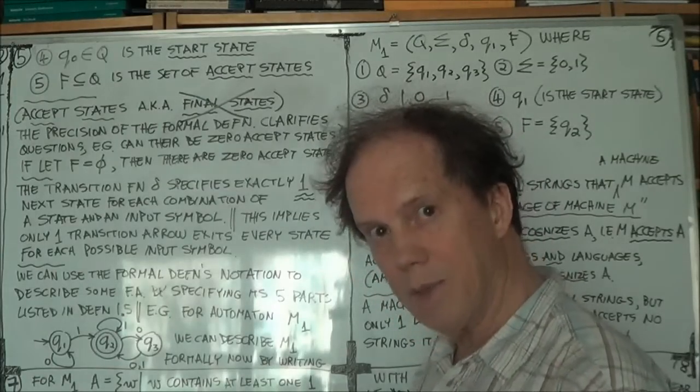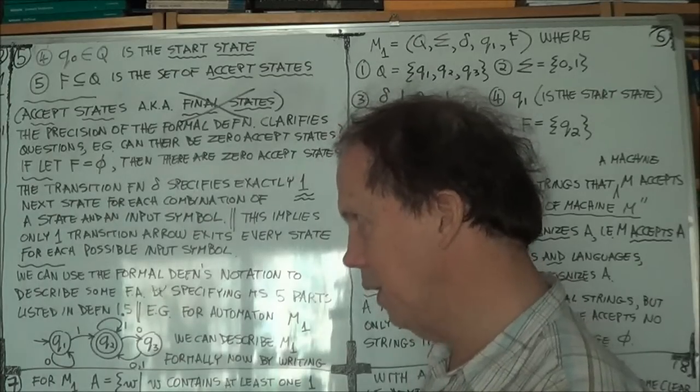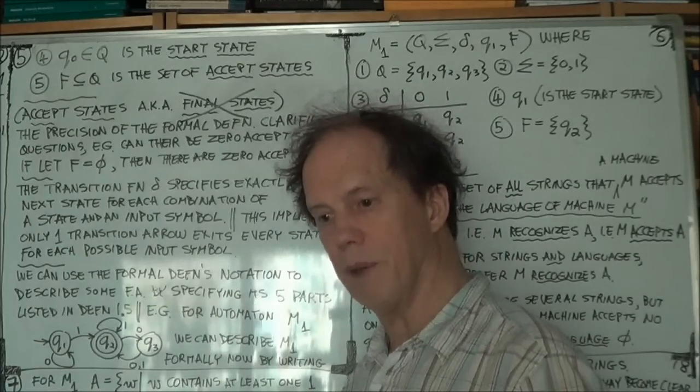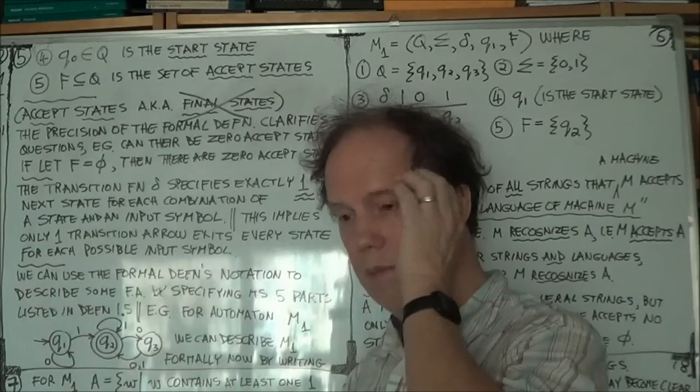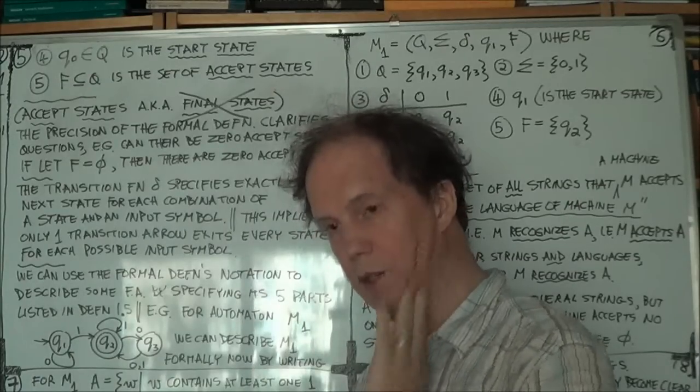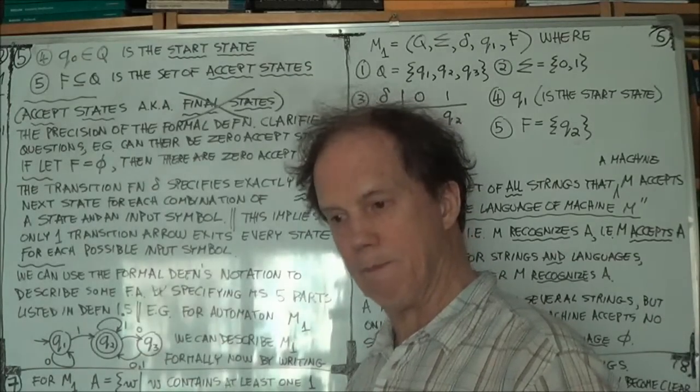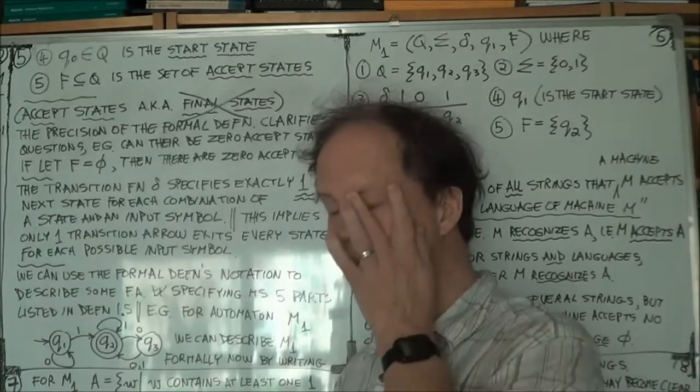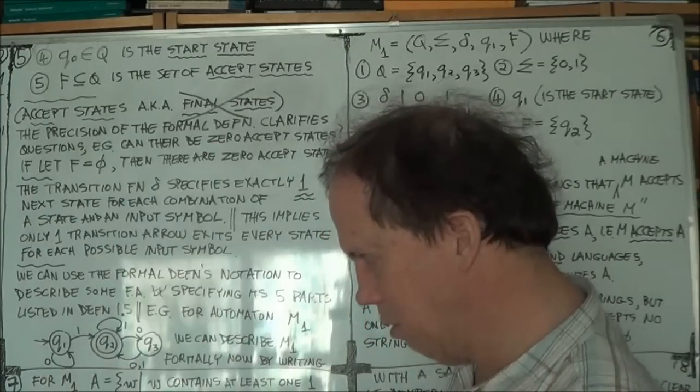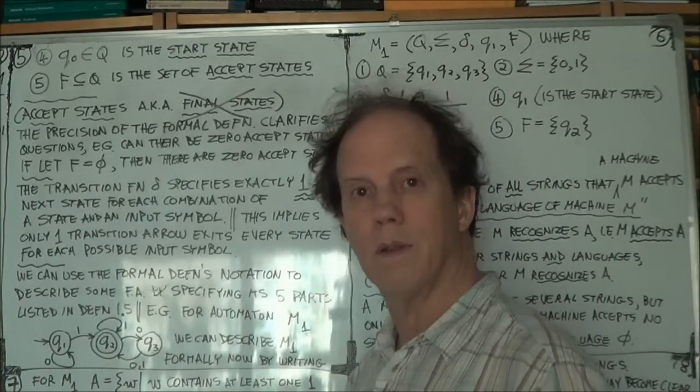And that comes out of the definition of your third term, from your transition function. Now it's a function, and a function by its nature in pure math, function always maps to just one element of your range. One element of the range. And hence that answers your question. So there's only one next state. Because delta colon, capital Q cross capital sigma arrow Q.